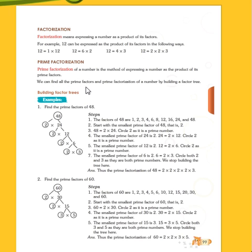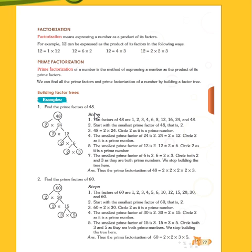We can find all the prime factors and prime factorization of a number by building a factor tree. How can we find a factorization tree? Draw and find a factor tree. Now we'll draw a factor tree. Here we can find the factor tree. Find the prime factors of 48. We have some steps to follow.